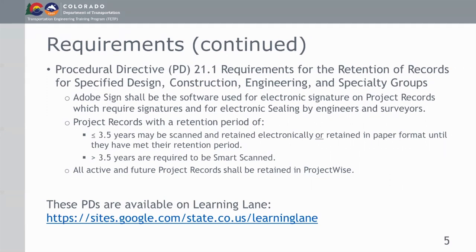Smart scanning is a term coined by CDOT to describe how a record is compressed, page-aligned, made readable through optical character recognition, and placed in an ISO-compliant format — which guarantees the file will be readable for many decades in the future regardless of the software or hardware used to create it. All active and future project records shall be retained in ProjectWise. These three points are essentially the backbone of PD21.1.